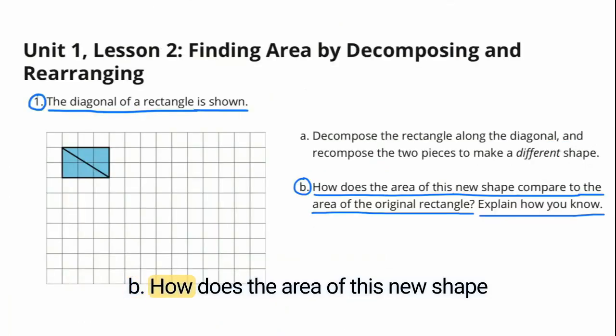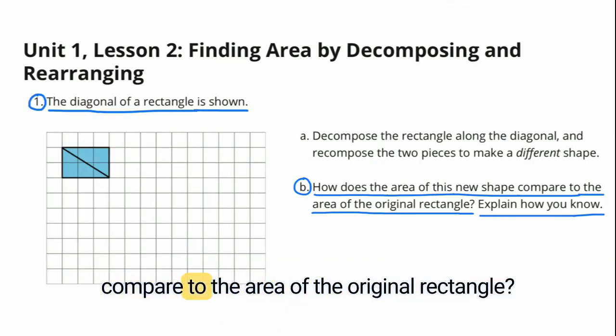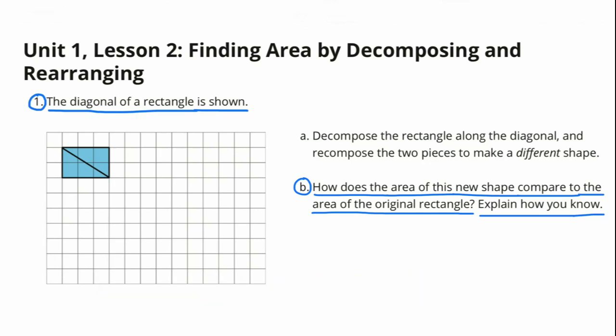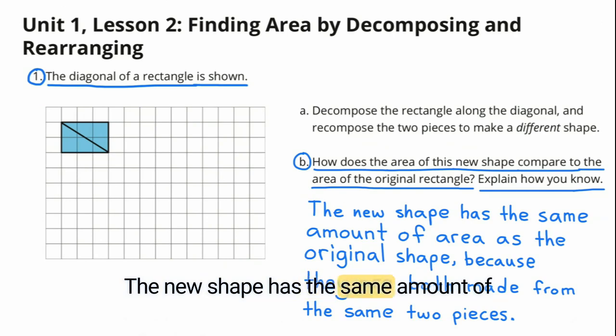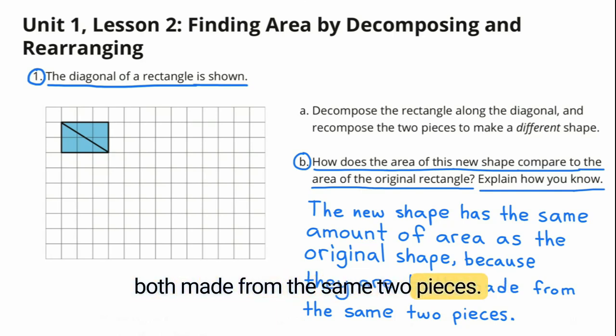B. How does the area of this new shape compare to the area of the original rectangle? Explain how you know. The new shape has the same amount of area as the original shape because they are both made from the same two pieces.